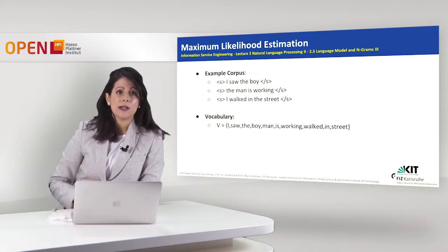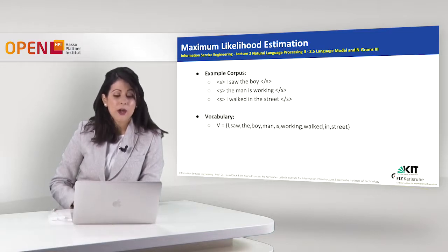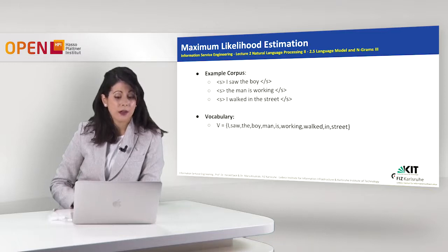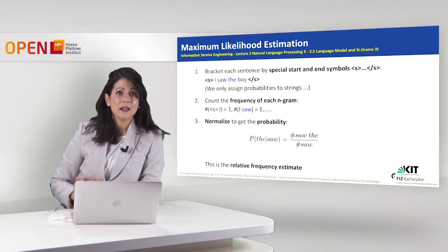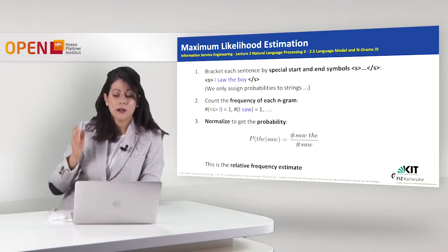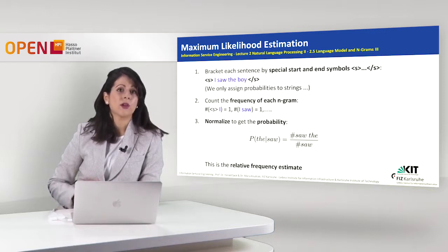Let's see now in a real example how we compute all those things. We have an example corpus of three sentences: 'I saw the boy,' 'the man is working,' and 'I walked in the street.' The vocabulary consists of all the words in those sentences. What we do first is bracket each sentence with special start and end symbols — the S and the clause S — for every sentence. Then we count the frequency of each n-gram.